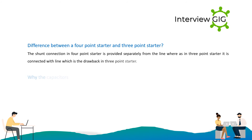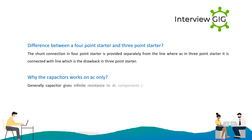Why do capacitors work on AC only? Generally, a capacitor gives infinite resistance to DC components — that is, it blocks DC components — while it allows AC components to pass through.